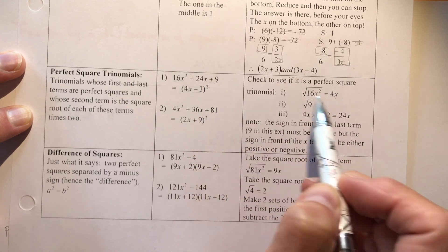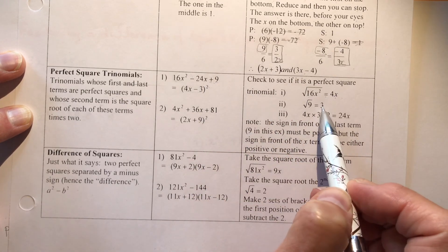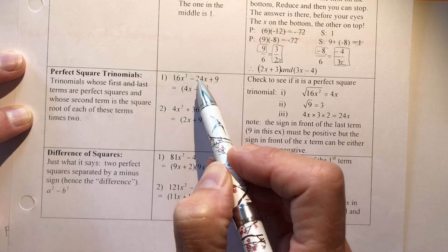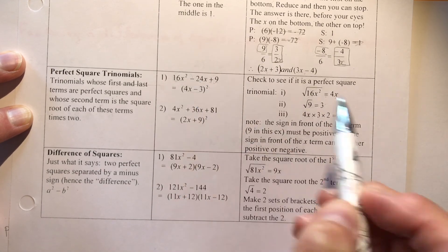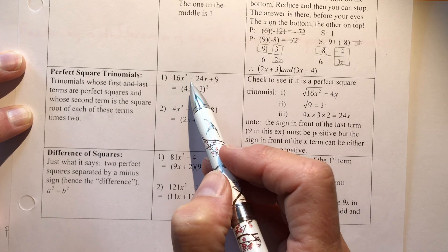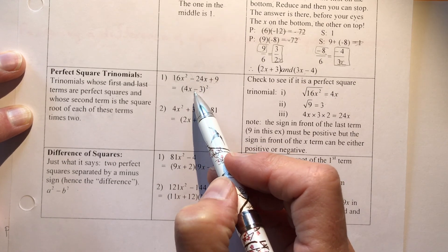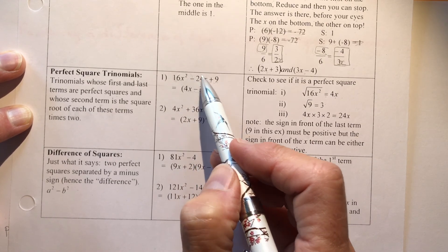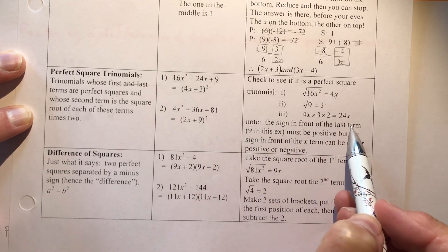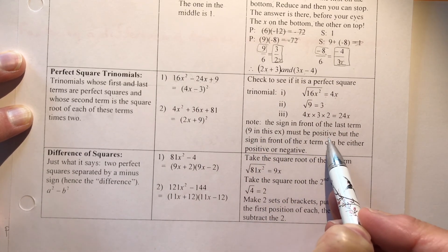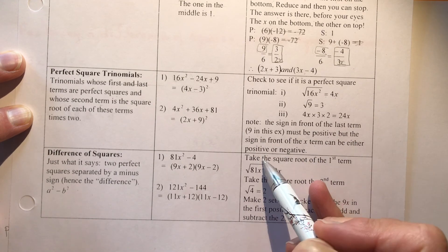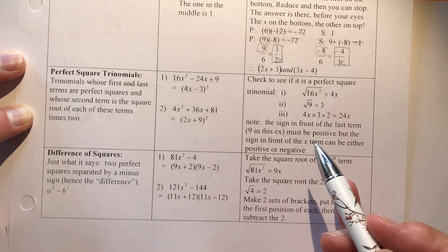The square root of the first term is 4x and the square root of the last is 3. These two numbers multiplied together times 2 give the middle term. The sign in front of the last term must be positive, but the sign in front of the x term can be either positive or negative.